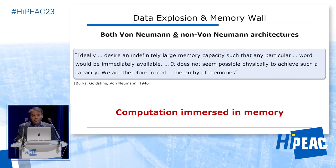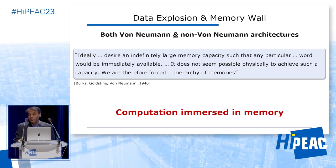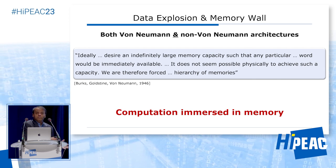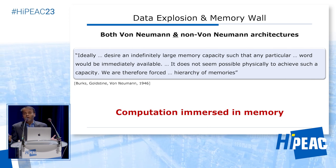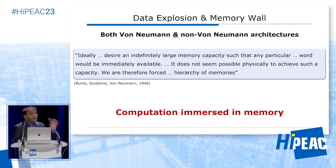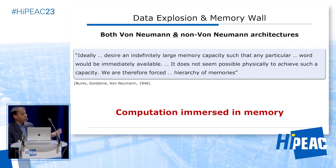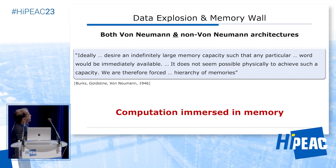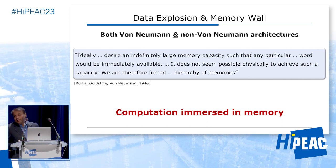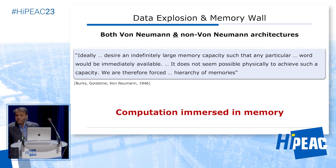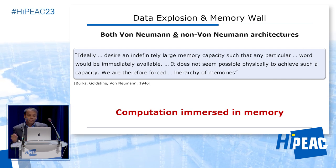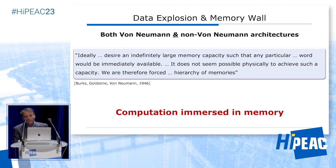There is nothing about von Neumann or non-von Neumann that has to do with this data explosion and the memory wall. Even if you take a hard-wired accelerator, which is non-programmable and a non-von Neumann machine, it has the same problem of the data explosion and the memory wall. If you read the seminal paper of von Neumann, he actually talks about this — he says that ideally you want an indefinitely large memory capacity, but such that any particular word would be immediately available, and he makes the point that doesn't seem to be physically possible. That's why you have memory hierarchy. So let's not blame von Neumann, and let's try to see how we can overcome the memory wall.